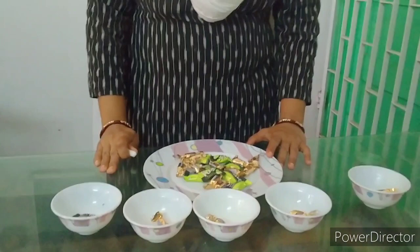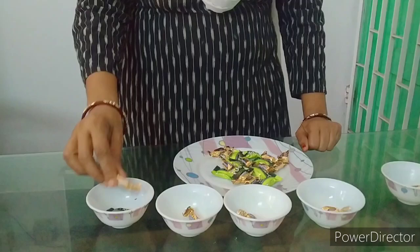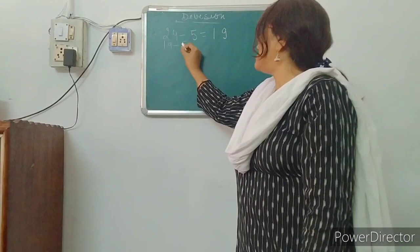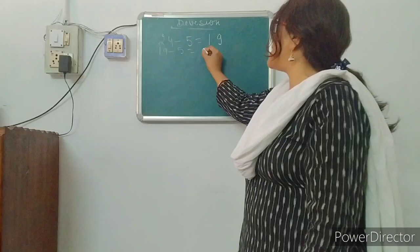Again, I am going to put 1 more chocolate in each bowl: 1, 2, 3, 4th bowl, 5. Now I have 19 chocolates. Again, I put 1 more chocolate in each bowl. That means 19 minus 5, I have 14 chocolates.